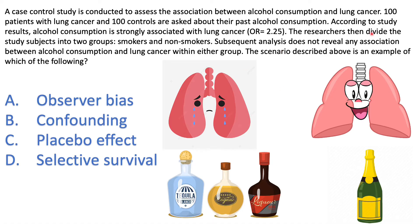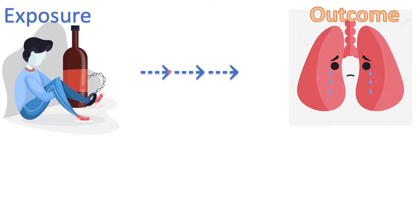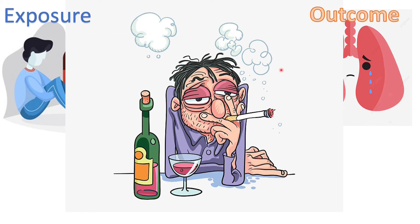However, the researchers then divided the study subjects into two groups — smokers and non-smokers — and found that in the end there's really no association between alcohol consumption and lung cancer. So we thought alcohol was the exposure leading to lung cancer and that there's a true association. When in reality, those people who drink more are actually more likely to be smokers, and there is really no true association between alcohol consumption and lung cancer. It's because of smoking, which is the true risk factor.